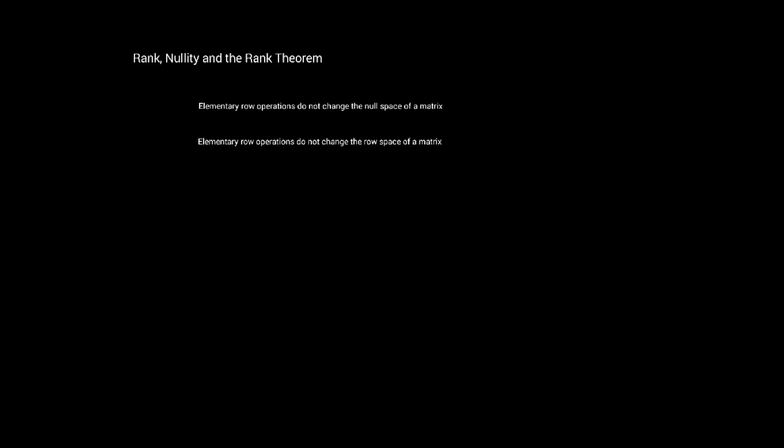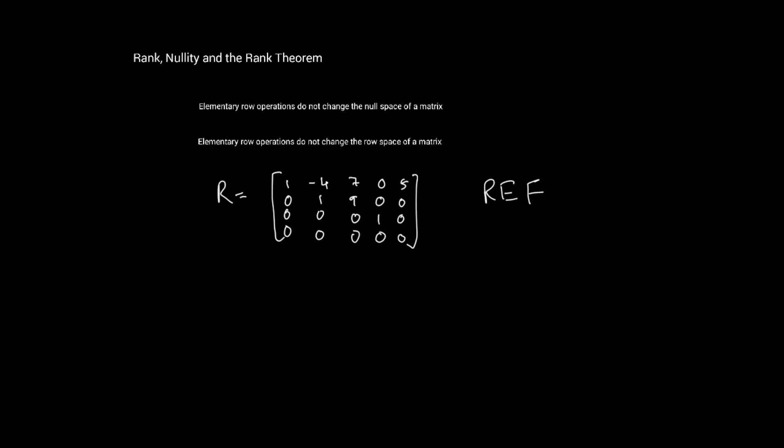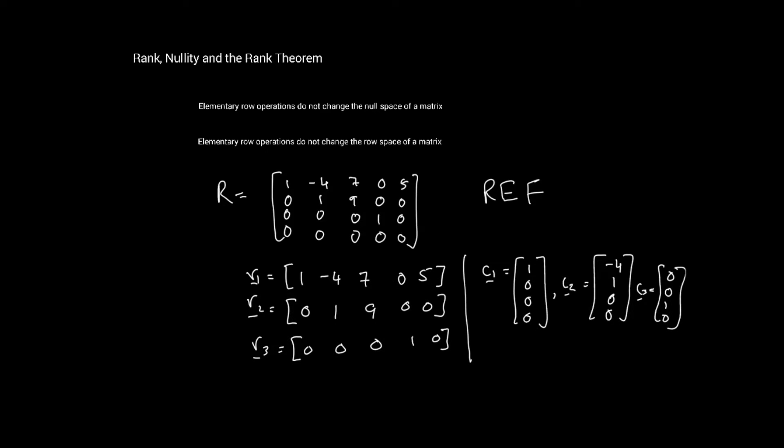We can use these ideas, using reduction of a matrix, to discover where the bases of a matrix lie. If a matrix R is in row echelon form, then the row vectors with the leading ones form a basis for the row space of R. Similarly, the column vectors with the leading ones form a basis for the column space of R. So if we look at a row-reduced matrix R in REF, these row vectors form a basis for the row space of R.